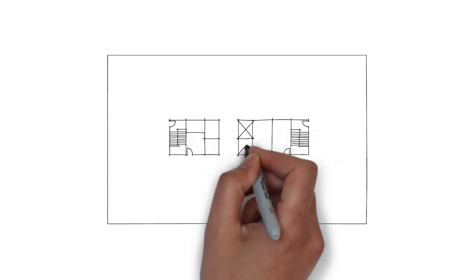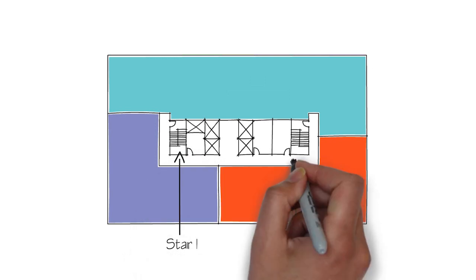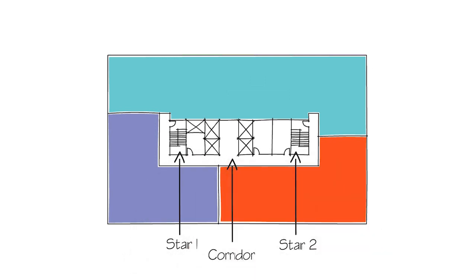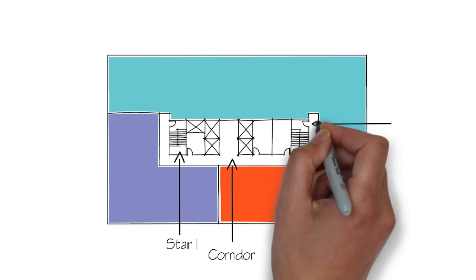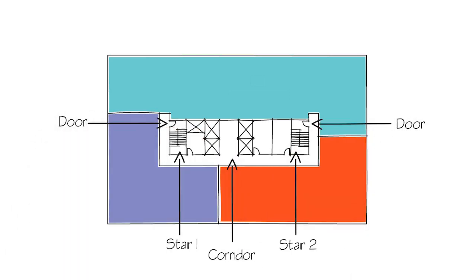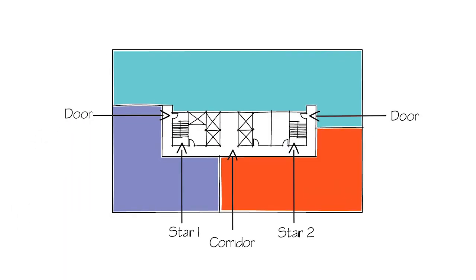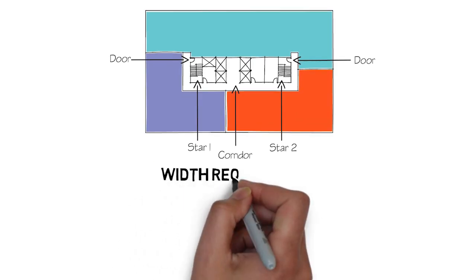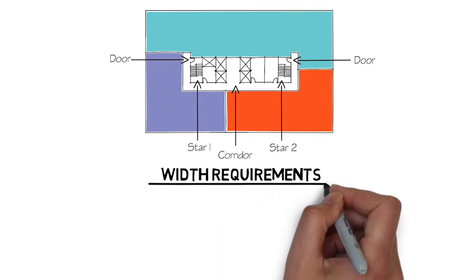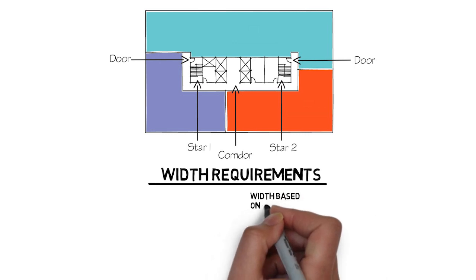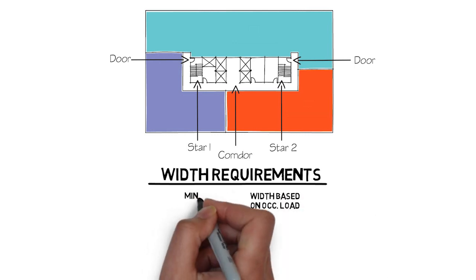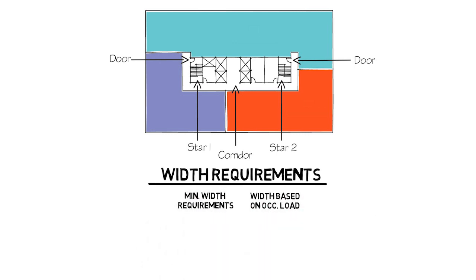Normally on any given floor you have two stairways and also a corridor or hallway that connects the two together for access. Additionally, each stairway has an access door. The question is how wide should these items be? There are two provisions for widths: one is based on the occupant load and another is based on a minimum width requirement. Minimum widths need to be met at all times, but they should never be less than that which is required by your occupancy loads.